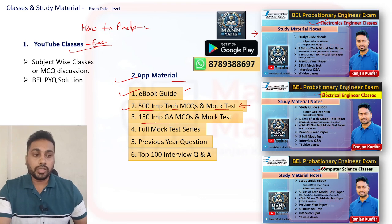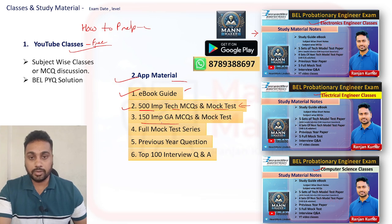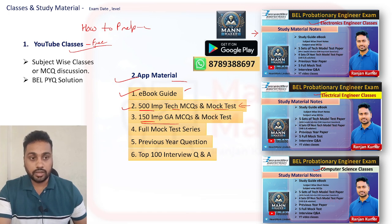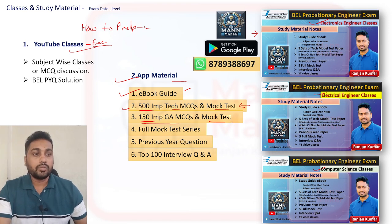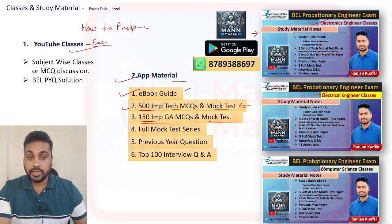Then you will get 150 important General Aptitude MCQs. As I discussed in the syllabus, from the non-technical section they ask 25 questions covering quantitative aptitude, reasoning, GK/GS, current affairs, and English. All 150 questions are divided across these topics and placed in this section.